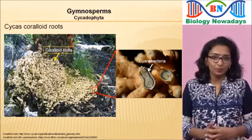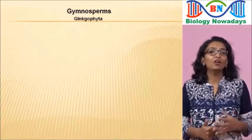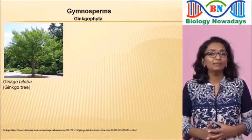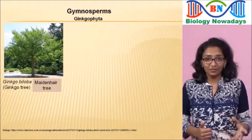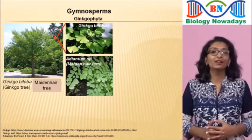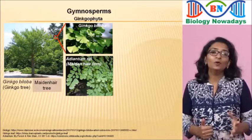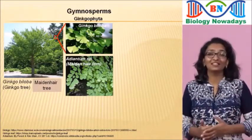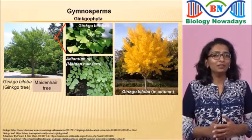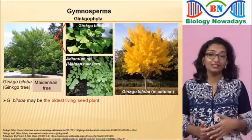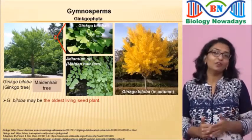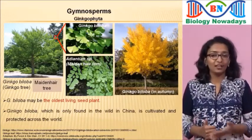The second group is Ginkgophyta. An important member is Ginkgo biloba, commonly called the ginkgo tree or maidenhair tree, because of the resemblance of its fan-shaped bilobed leaves to those of the pteridophyte Adiantum, commonly called the maidenhair fern. Ginkgo biloba may be the oldest living seed plant, and some botanists regard it as one of the wonders of the world. Found only in the wild in China, it is cultivated and protected across the world.